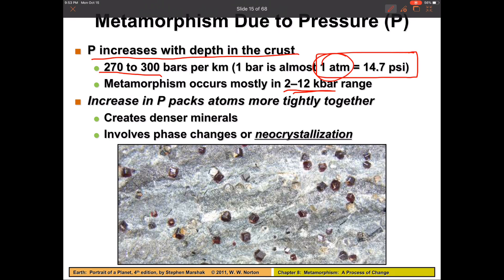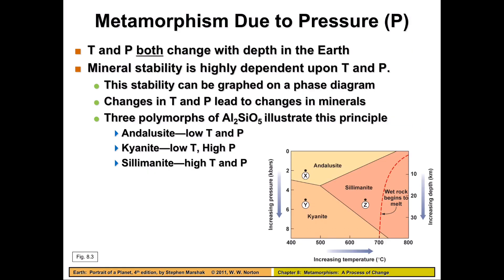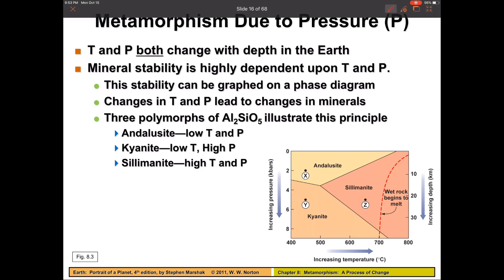An increase in pressure basically squashes a rock. If we have a rock that starts out one size and we pack it under pressure, it might end up much smaller, which means all of our atoms are getting packed tighter and tighter, creating a much denser mineral. This is how we get things like garnets, as you can see in this picture. Both temperature and pressure change inside the Earth, and that's all going to be dependent upon your tectonic setting.